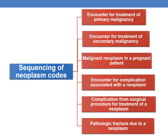First, coming to sequencing of neoplasm codes. It is subcategorized into: encounter for the treatment of primary malignancy, encounter for the treatment of secondary malignancy, malignant neoplasm in pregnant patient, encounter for complication associated with neoplasm, complication for surgical procedure for the treatment of neoplasm, and pathological fracture due to neoplasm.